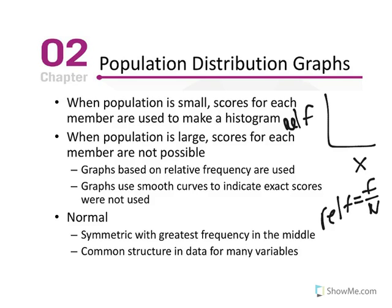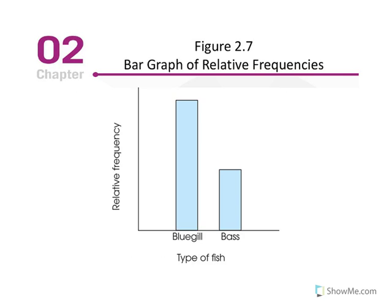I think I skipped this point that the graphs use smooth curves to indicate exact scores were not used. So we'll see an illustration of that in just a second. So here is an example.